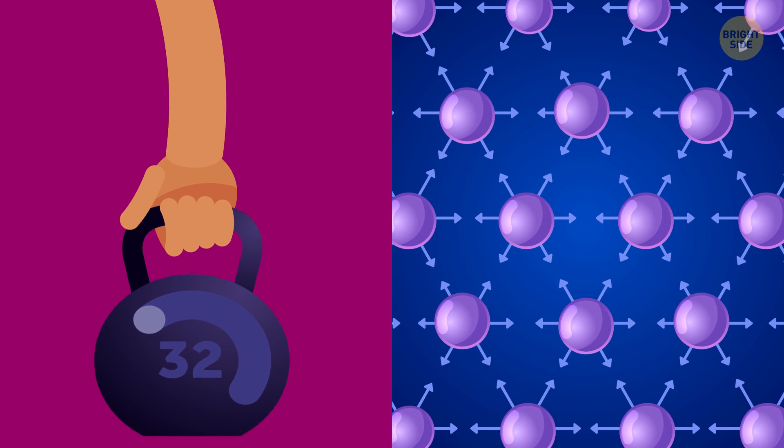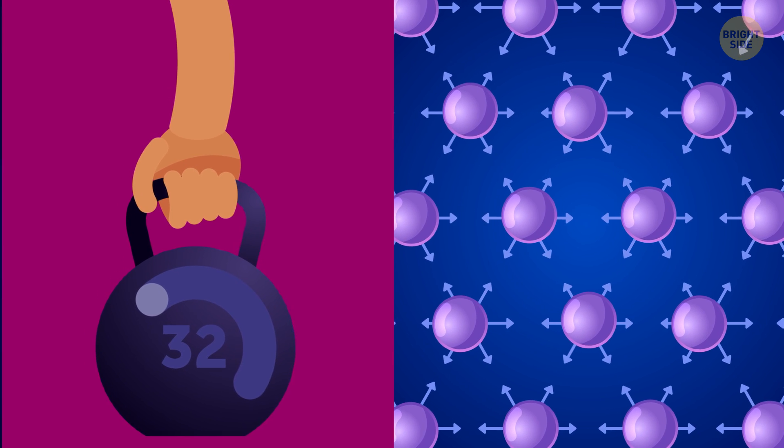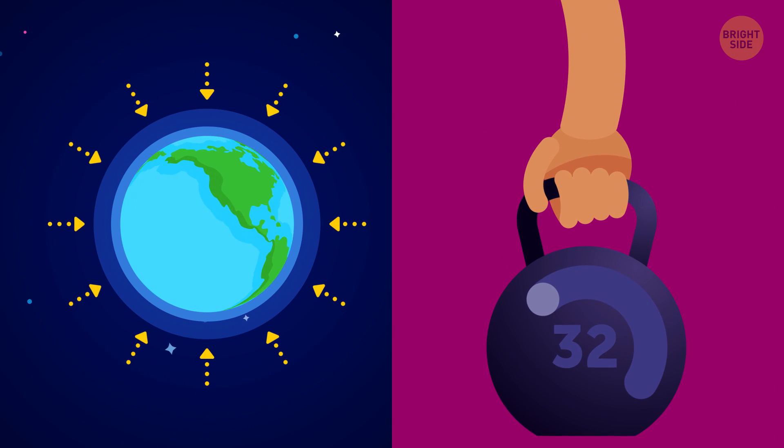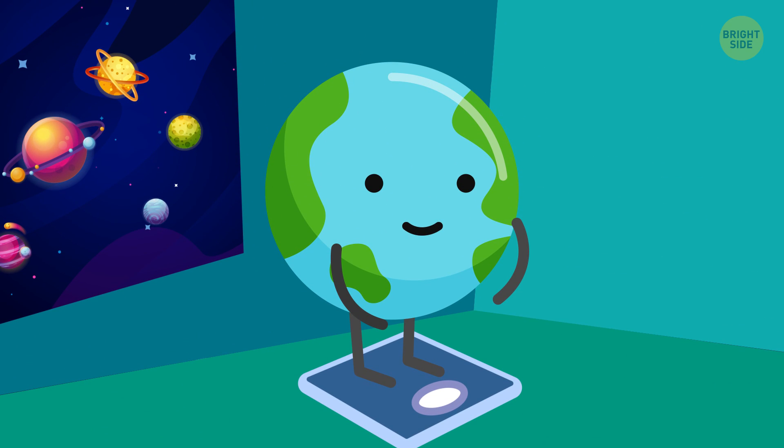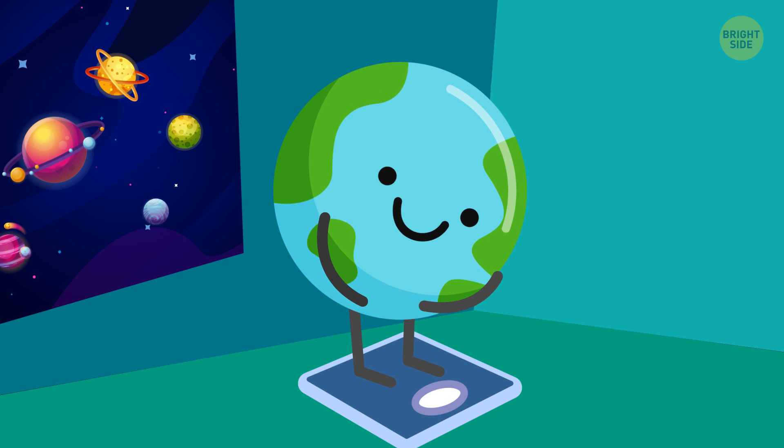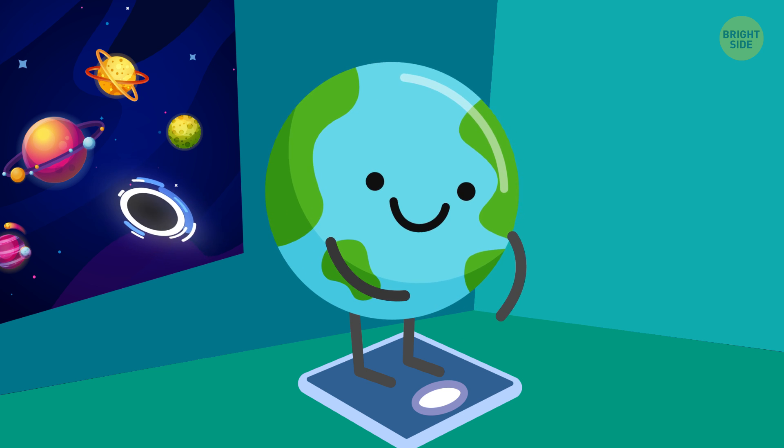The more matter you have, the bigger the mass. And the bigger the mass is, the stronger an object's gravitational pull is. Well, why does that matter? You might have noticed that the gravity on our planet never changes, right? That's because the mass of the Earth always remains the same.